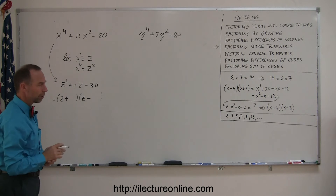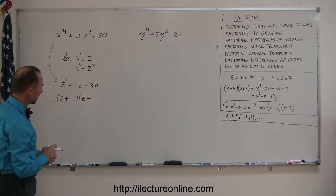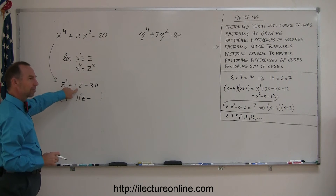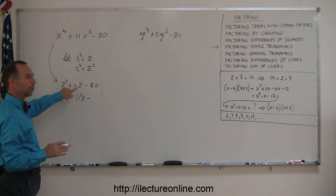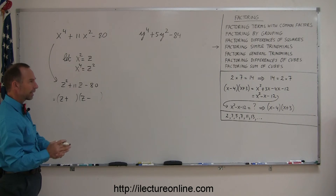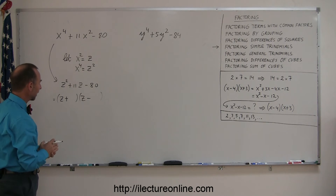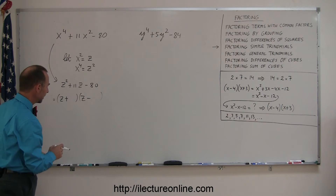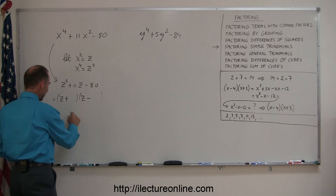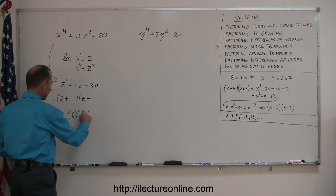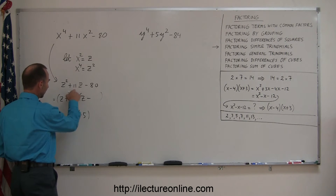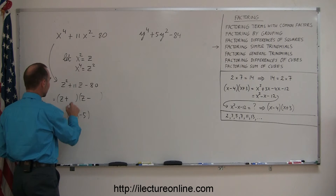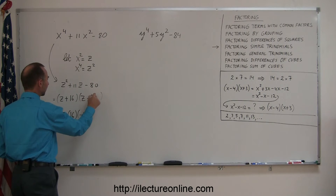I see a negative 80 there, that means I need a positive and a negative, because the only way to get a negative number is to multiply a positive and negative number. I'm looking for two numbers where when I multiply I get 80 and when I add them together I get a positive 11. So one is positive, one is negative, and they differ by 11. I think 16 and 5 will work — you'll need a negative 5, because if you add them together you get positive 11, and if you multiply them together you get negative 80. So positive 16 and negative 5.